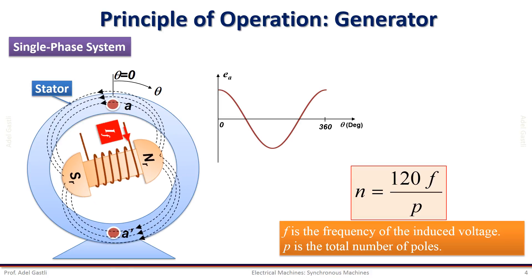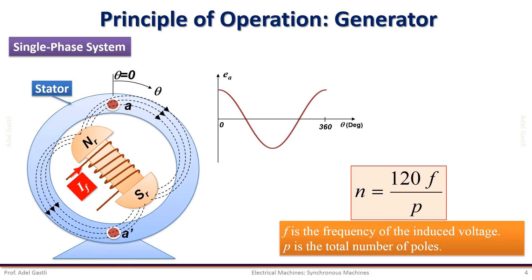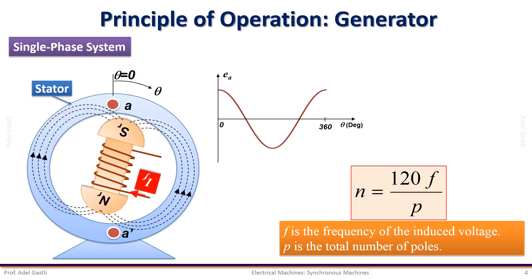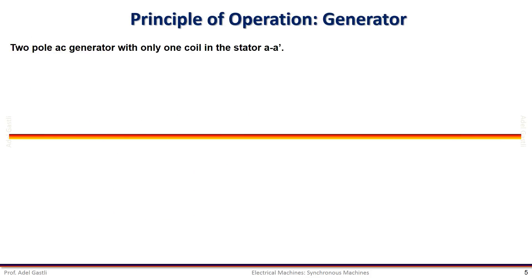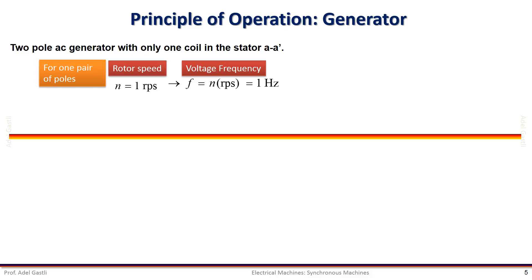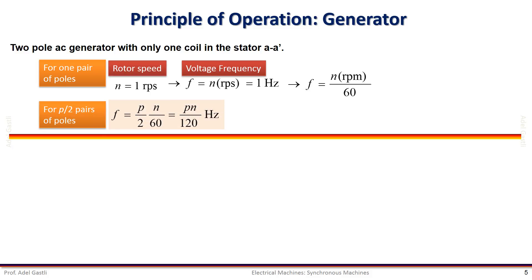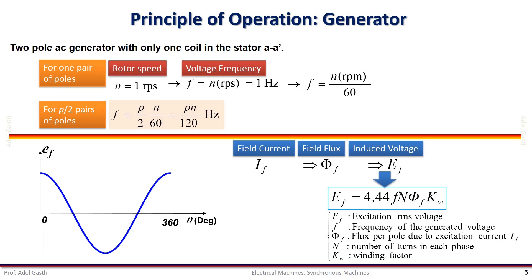Where F is the frequency of the induced voltage and P is the total number of poles. This reminds us of the synchronous speed of the induction machine, which is the speed of the revolving field. For a two-pole AC generator with only one coil AA' and one pair of poles, if the rotor speed is N equal to one revolution per second, the frequency F equals one hertz. So we write frequency as RPM over 60, and for P/2 pairs of poles, the frequency in hertz is P/2 × N/60, equivalent to P×N/120. Therefore, for an excitation current I_F generating magnetic field flux phi, according to Faraday's law, the induced voltage is defined by the famous equation seen in the transformer and induction machine chapters.